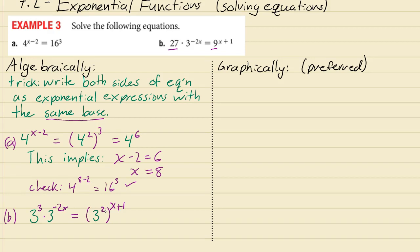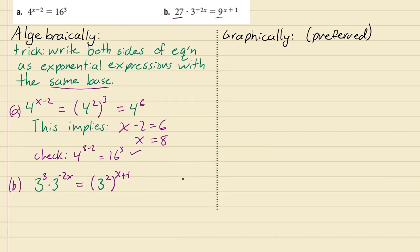And that way if all of the bases are 3 you can combine them all and you'll get 3 to the power 3 minus 2x when you add those exponents should be equal to 3 to the power 2 times x plus 1 when you add those exponents.